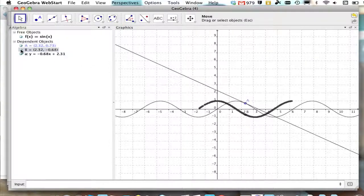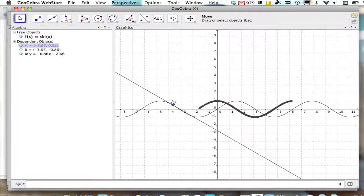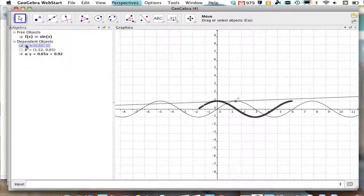And if I don't want to see B anymore, I can turn it off by clicking the little circle next to it in the algebra view. I can also turn it back on if I like by clicking here again.